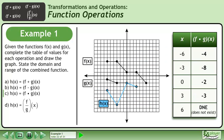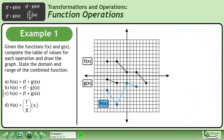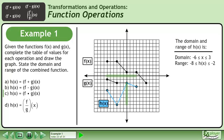We can now draw the graph of h. The domain of h is between negative 6 and 3 inclusive. The range of h is between negative 8 and negative 2 inclusive.